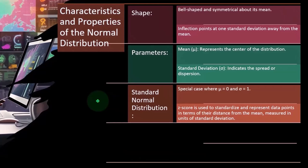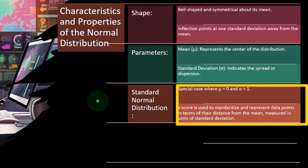That means you're going to have half of the data on the upper or positive end and half on the negative. And then the Z-score is used to standardize and represent data points in terms of their distance from the mean measured in units of standard deviation.